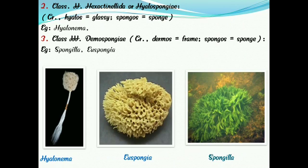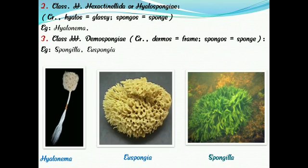The next class is Hexactinellida, also called Hyalospongiae or glass sponges. 'Hyalos' means glassy. An example is Euplectella. The skeleton is made up of six-rayed triaxon spicules made of silica, which is why they are called glass sponges.